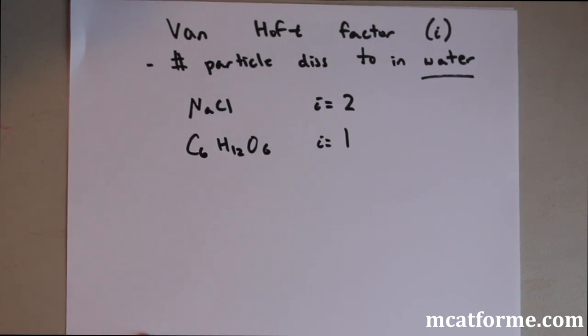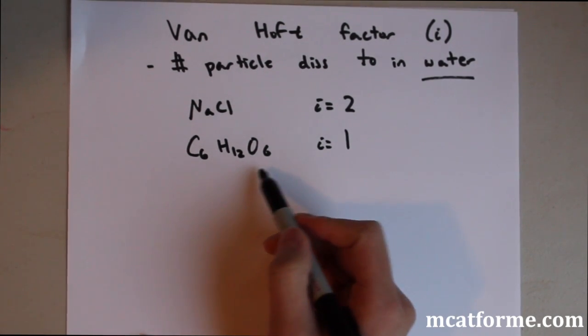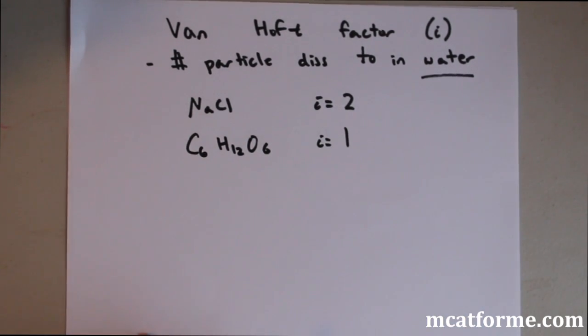Sugar dissolves in water, but it doesn't dissociate into different particles. It doesn't dissociate into maybe like CO2 and H2O and H2. It's just simply glucose. It dissolves in water, but it doesn't dissociate into smaller particles. That's why i equals 1.